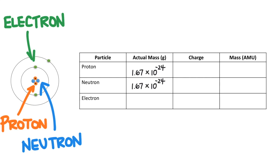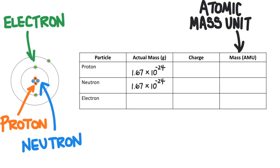This is more commonly expressed in atomic mass units or AMU. The mass of a proton and the mass of the neutron are the same in this scale, 1 AMU. The protons are positively charged and the neutrons have no charge.